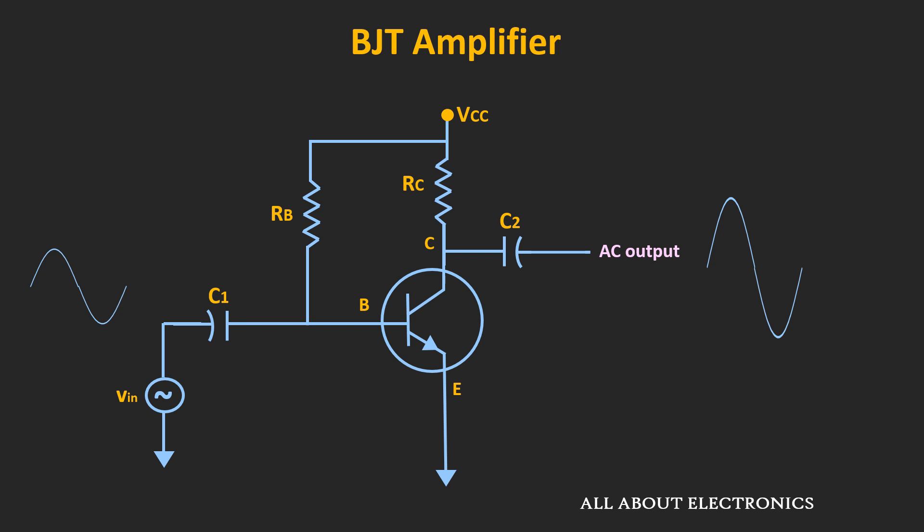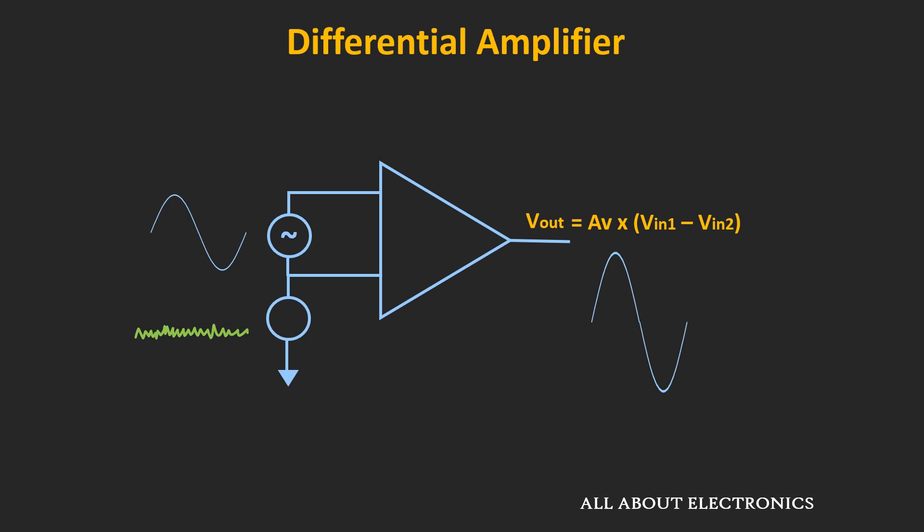In such a single-ended amplifier, when some noise or interference gets coupled to the input, it will also get amplified and will appear at the output side. But in case of the differential input, such common mode noise on the input side can be eliminated at the output.